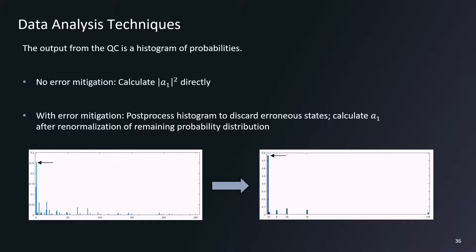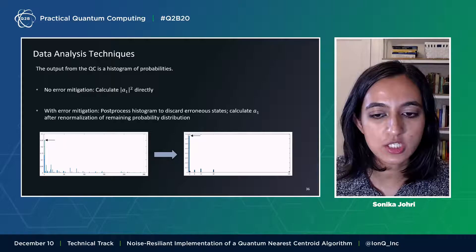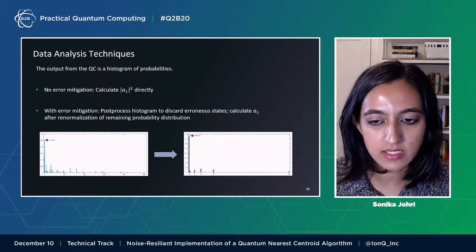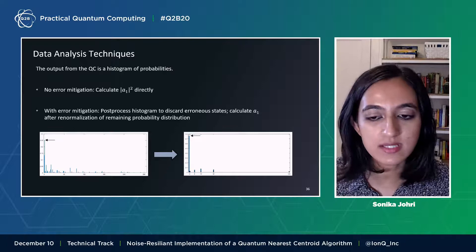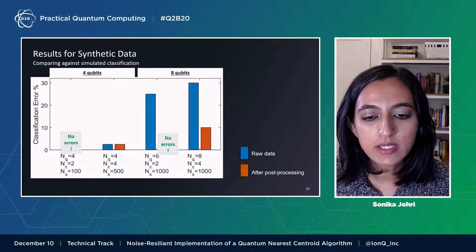So what does that mean in practice? Well, the output from the quantum computer is a histogram of probabilities corresponding to the coefficient shown in the last slide. One can, of course, calculate a1 squared from the last slide directly from this histogram as shown in the figure on the left here. On the other hand, one could also post-process this histogram to discard states that we already know lie outside the encoding subspace and calculate a1 squared after renormalizing the remaining probability distribution as shown here on the right. You will see in the next slide that this second technique actually provides enormous increases in the accuracy of the algorithm.